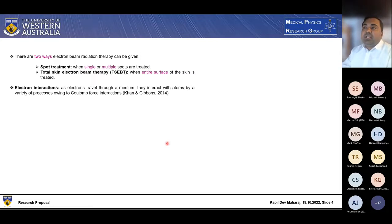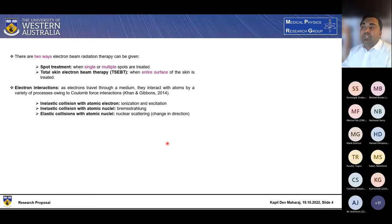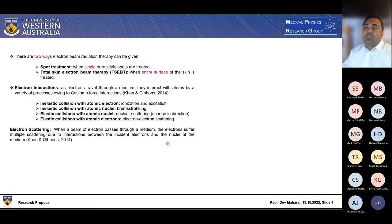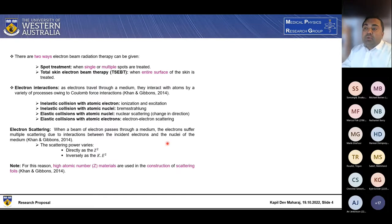In terms of electron interaction, electrons can interact with the medium by Coulomb force interaction. There are four different ways. One is inelastic collision with the atomic electron, in which the atoms of the medium can ionize and excite. Inelastic collision with atomic nuclei, which produce the Bremsstrahlung photons. Elastic collision with atomic nuclei, which causes nuclear scattering, which causes changes in the direction of the electron. And elastic collision with the atomic electron, which produces electron-electron scattering. In terms of electron scattering, when a beam of electrons passes through a medium, the electron suffers multiple scattering due to interaction between the incident electron and the nuclei of the medium. And that scattering varies directly with the atomic number of the medium and inversely as the square of the kinetic energy of the beam.